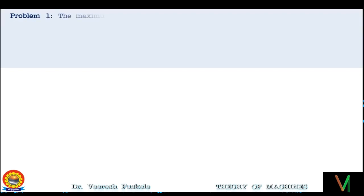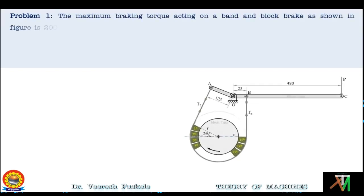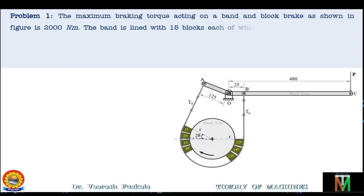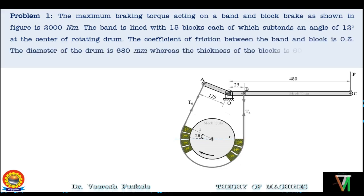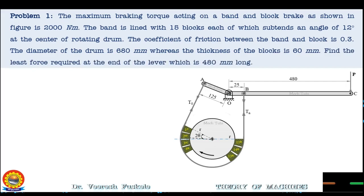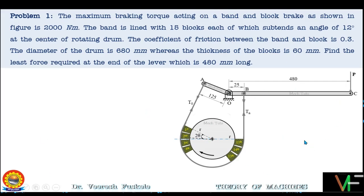The problem statement is as follows: The maximum braking torque acting on a band and block brake as shown in the figure is 2000 Nm. The band is lined with 15 blocks, each of which subtends an angle of 12 degrees at the center of the rotating drum. The coefficient of friction between the band and the block is 0.3. The diameter of the drum is 680 mm whereas the thickness of the blocks is 60 mm. Find the least force required at the end of the lever which is 480 mm long.